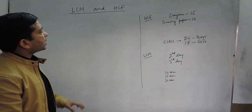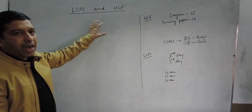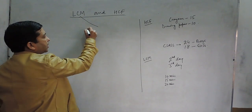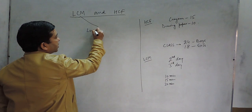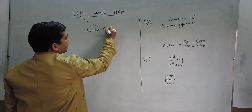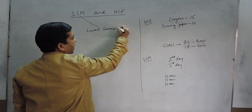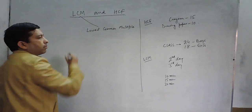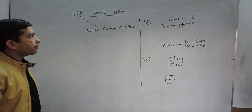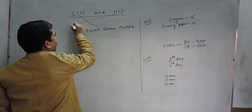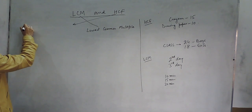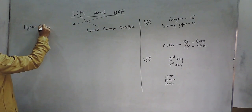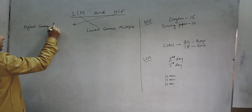Hello everyone, this is the chapter LCM and HCF. LCM is actually known as Lowest Common Multiple — that is the full form for the term LCM. When we say HCF, the full form is Highest Common Factor.